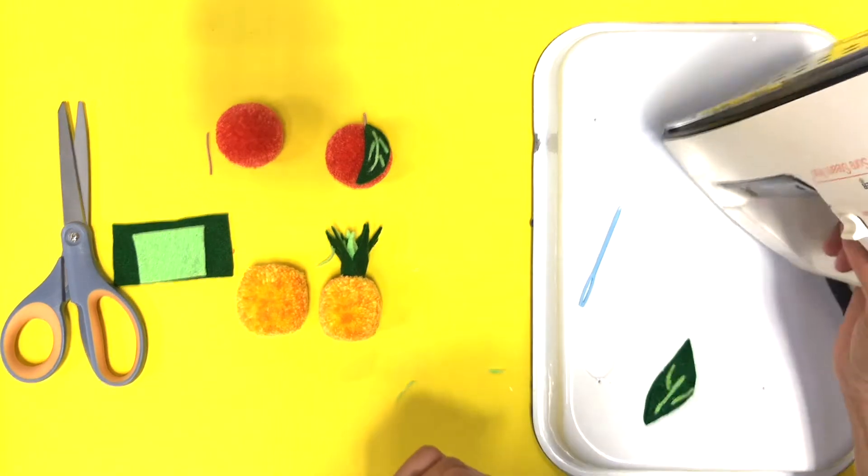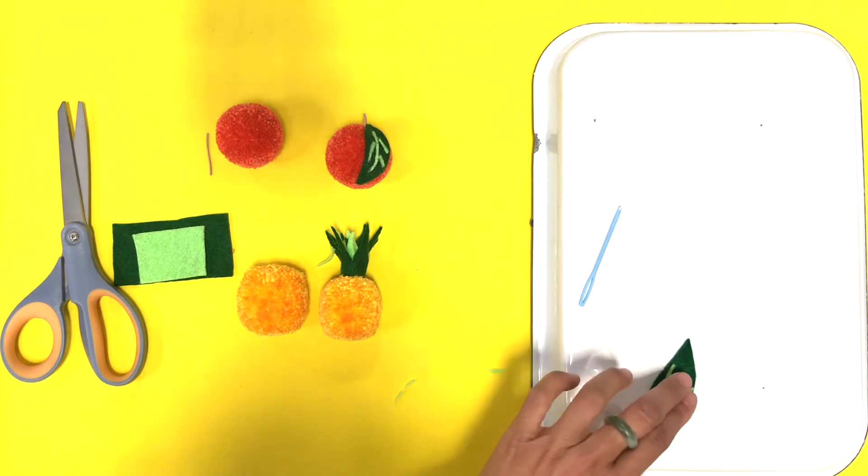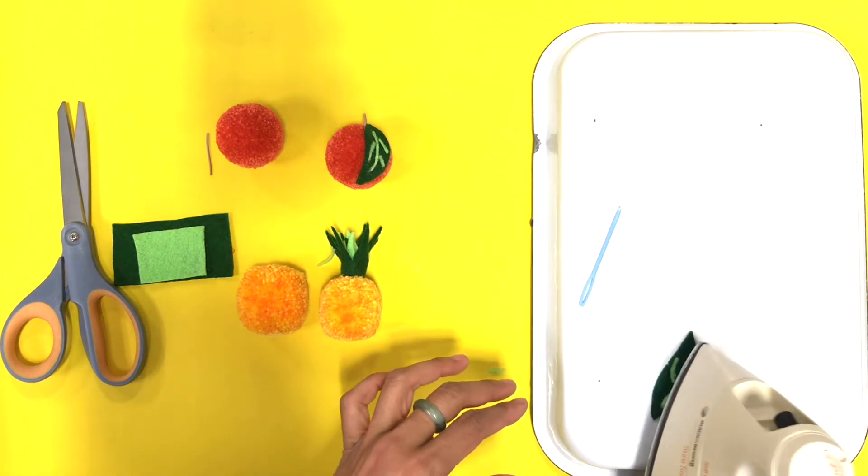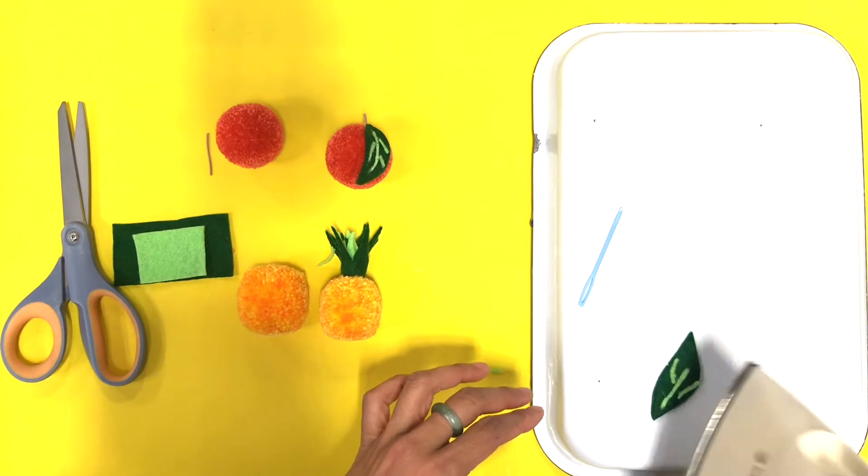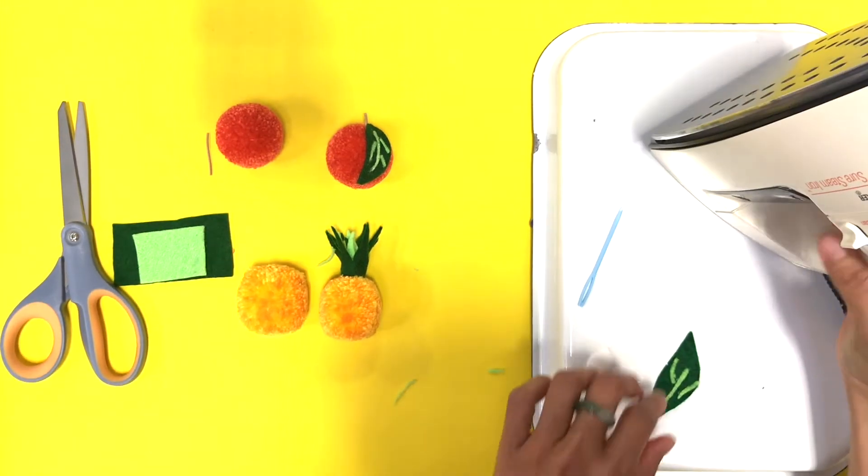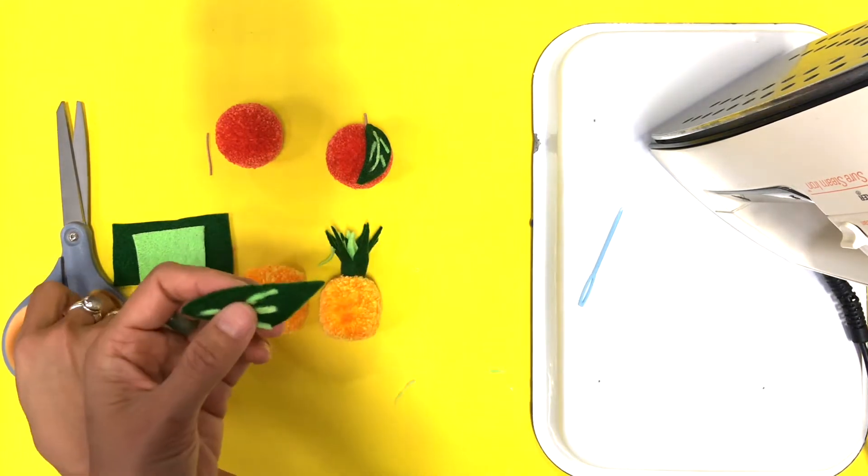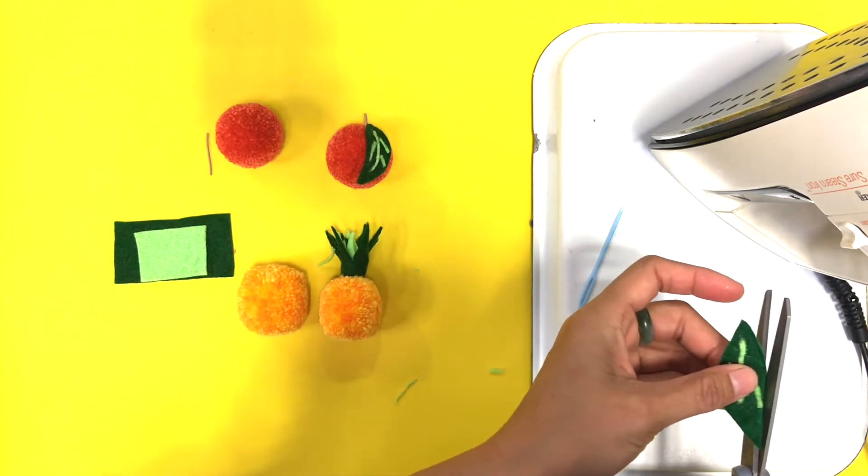Also, if you want to make sure you don't get glue on your iron, you could just put a piece of tissue or a piece of paper before you lay down your iron if you want. So here's my leaf. I have a little cut here, so I'm going to trim this down.